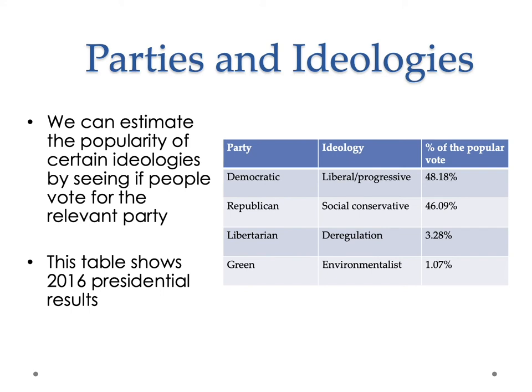We can estimate the popularity of certain ideologies by seeing if people vote for the relevant political party. Democrats have had a greater share of the popular vote in most elections since 1992—there's only been one election since 1992 where Democrats didn't win the popular presidential vote, which was in 2000, though they still had the popular vote that year. Right now, political parties tend to line up with ideologies, which means there's a high degree of polarization—a society where people split into two pretty clear camps that are far away from one another.